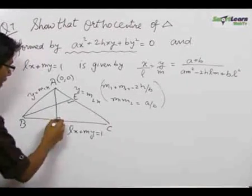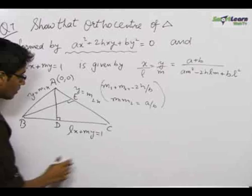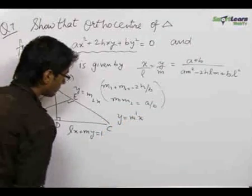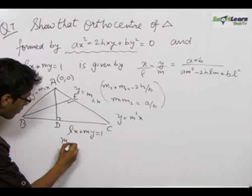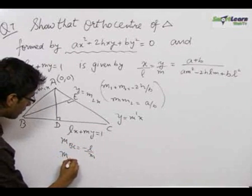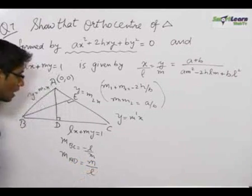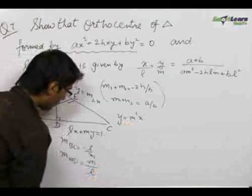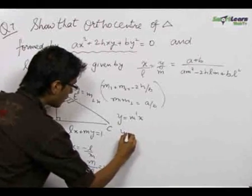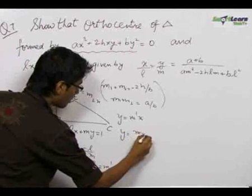Now any altitude AD passing through origin will have the equation y equals m dash x. We know that the slope of BC is given by minus L upon M. So the slope of AD which is perpendicular to BC will be the negative reciprocal equal to M by L. So putting the value of m dash as M by L we get equation of AD as y equals Mx by L.